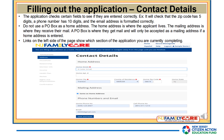Do not use a P.O. box as a home address. The home address is where you live; the mailing address is where you receive mail. A P.O. box is where you get mail and will only be accepted as a mailing address if a home address is entered.